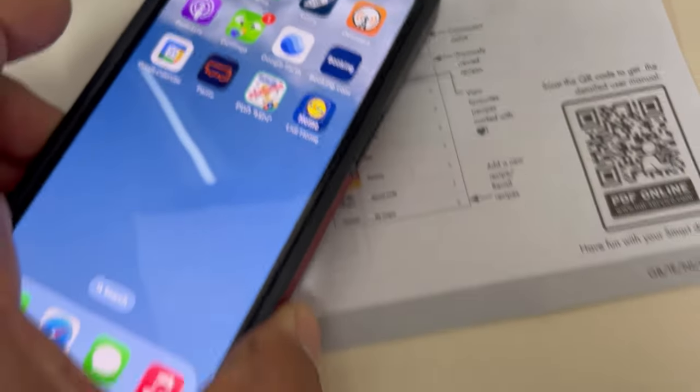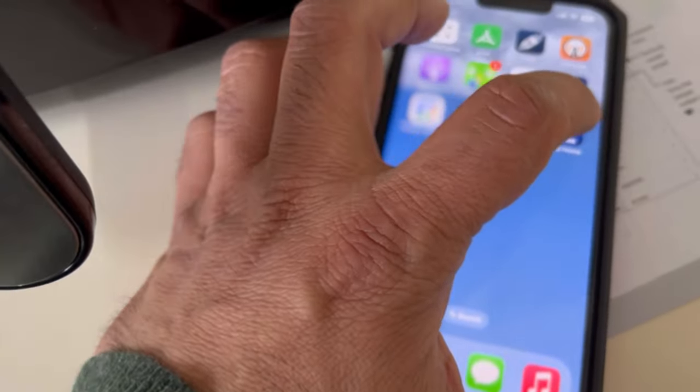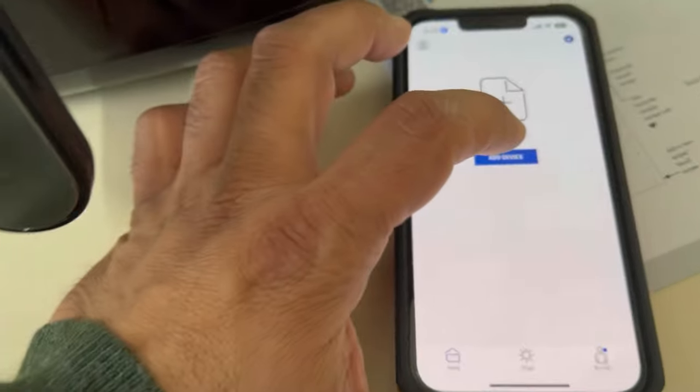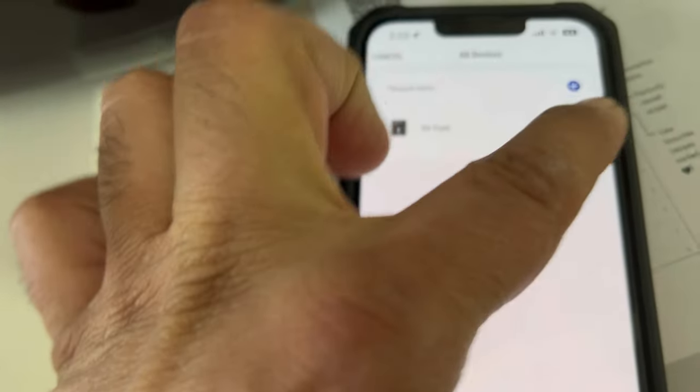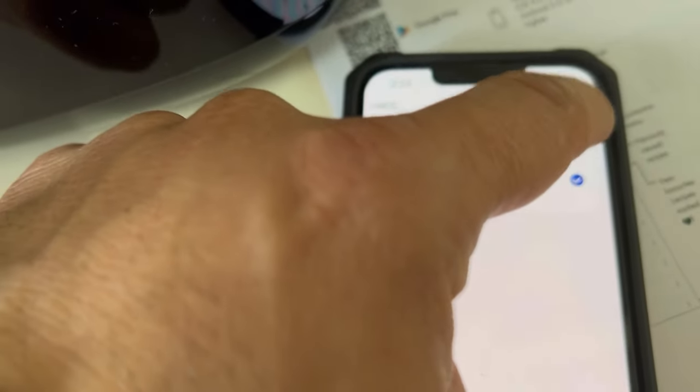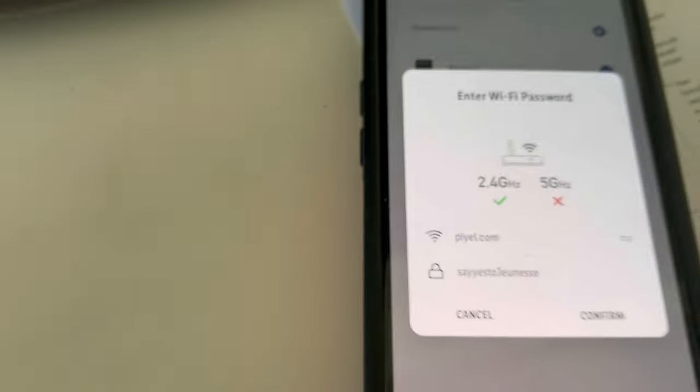On the app you can scan, download the app Lidl Home for your mobile device, then add device. It will detect that there is an air fryer device. Go to add, select the air fryer, and select the plus sign to connect it through Bluetooth. Now it's connecting. It's still blinking and connecting. It should take a couple of seconds.